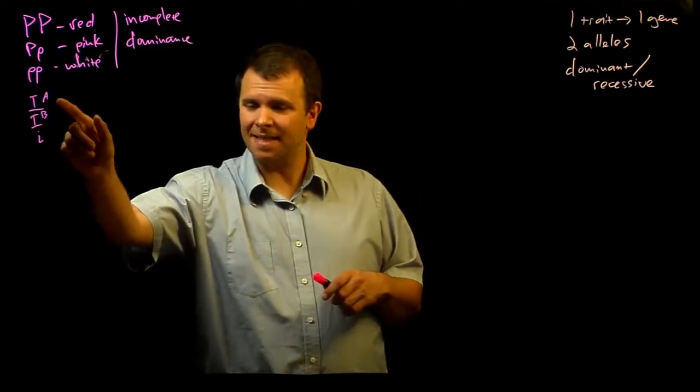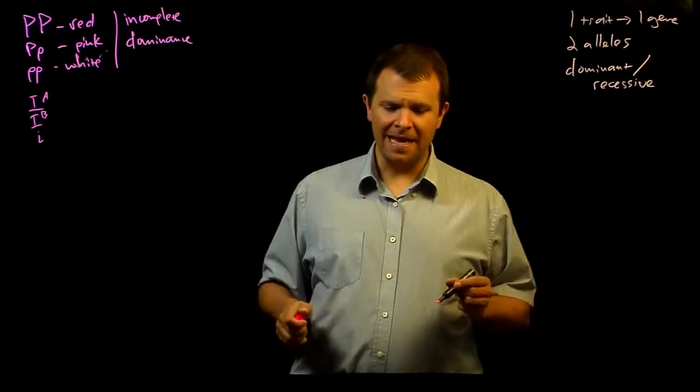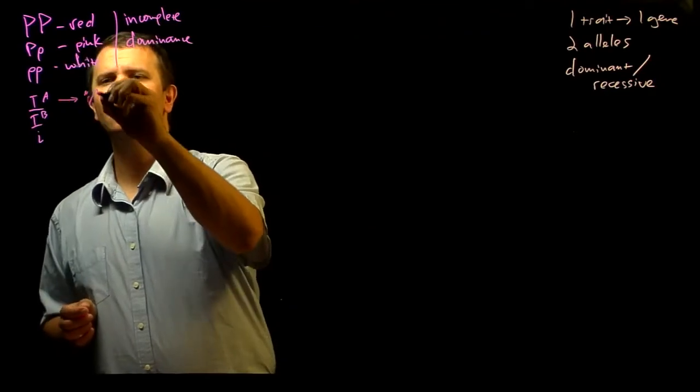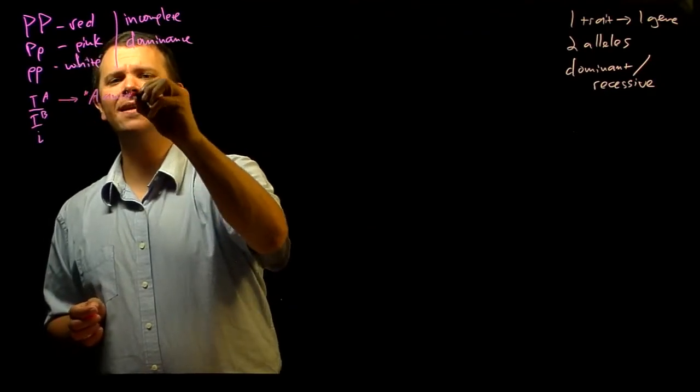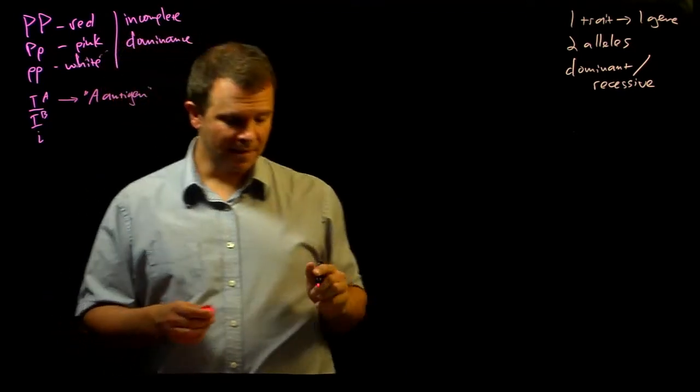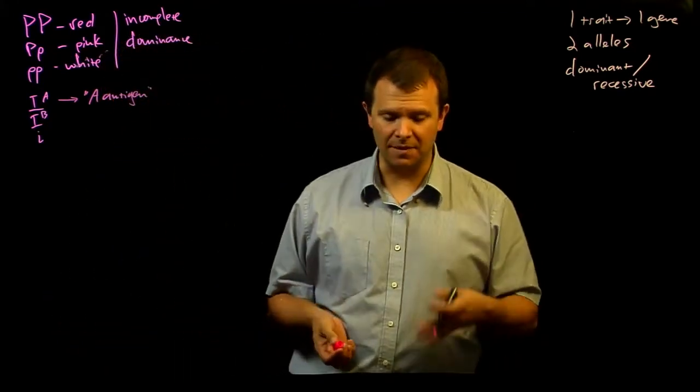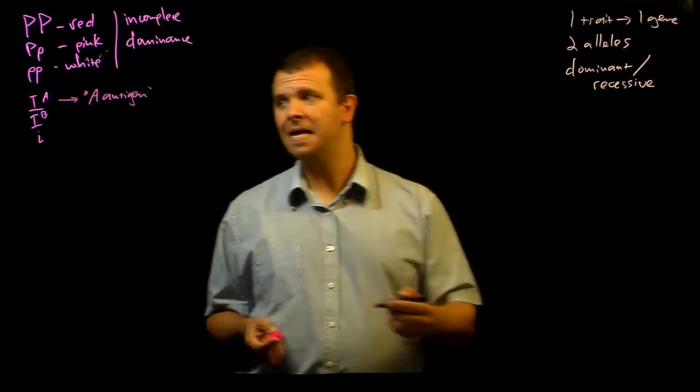And so this IA allele encodes an enzyme that makes a polysaccharide called the A antigen, type A antigen. And if you have the A antigen on the outside of your red blood cells, then you have type A blood.